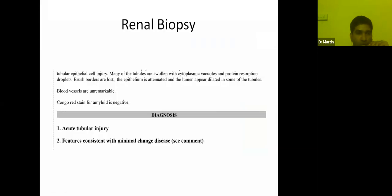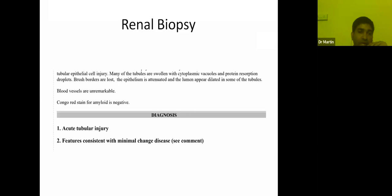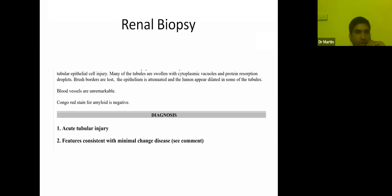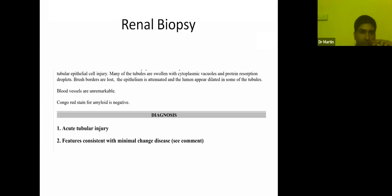The renal biopsy showed acute tubular injury plus features consistent with minimal change disease. Though minimal change disease is usually diagnosed in children, adult-onset minimal change disease is also described and fairly common. It responds very well to steroids in adults, just as in children. We started the patient on 2 mg/kg steroid — a tough call as she was already diabetic on hypoglycemic agents. There was some worsening of diabetes, controlled with insulin. By around 6 weeks we got remission of proteinuria — it became zero. The anasarca resolved, the patient is completely normal, steroids were tapered off, and blood sugars are now well controlled.